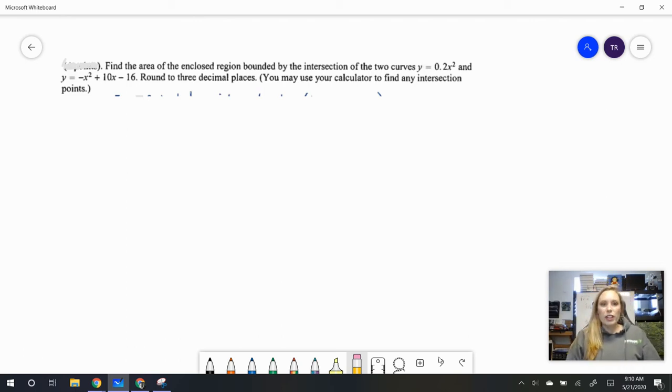In this problem, we are going to find the area of the enclosed region bounded by the intersection of two curves: y equals 0.2x squared and y equals negative x squared plus 10x minus 16. We're going to round to three decimal places and use our calculator to find any intersection points.